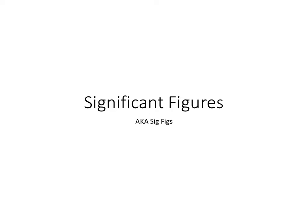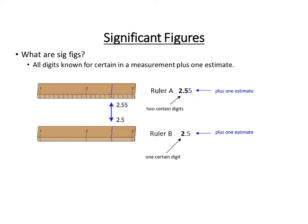We're going to talk about a concept in quantitative science classes like chemistry and physics called significant figures, often referenced as sig figs for short. So what exactly is a sig fig or significant figure? It's all digits that you know for certain in a measurement plus one estimate.